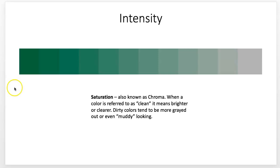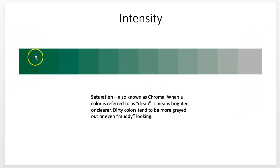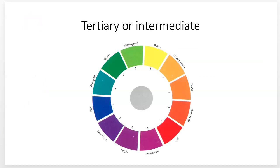Saturation is sometimes called intensity or chroma — keep those terms straight, as different sources may use different words for the same thing. We talk about intensity meaning colors are clean or dirty — grayed out, muddy, or dull versus clean, bright, high intensity, and full chroma.